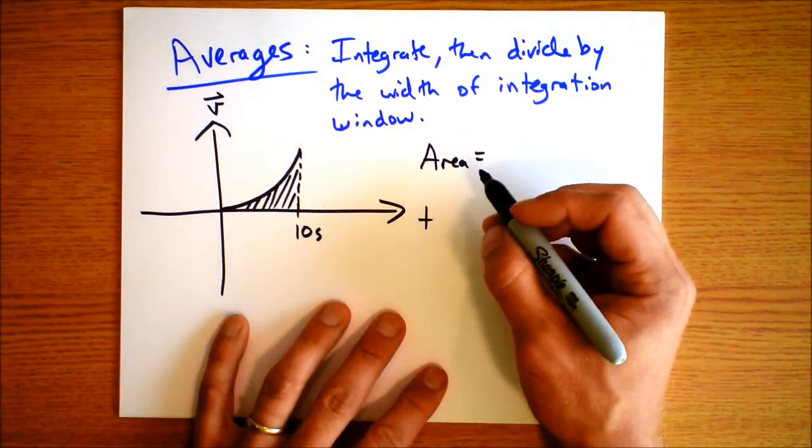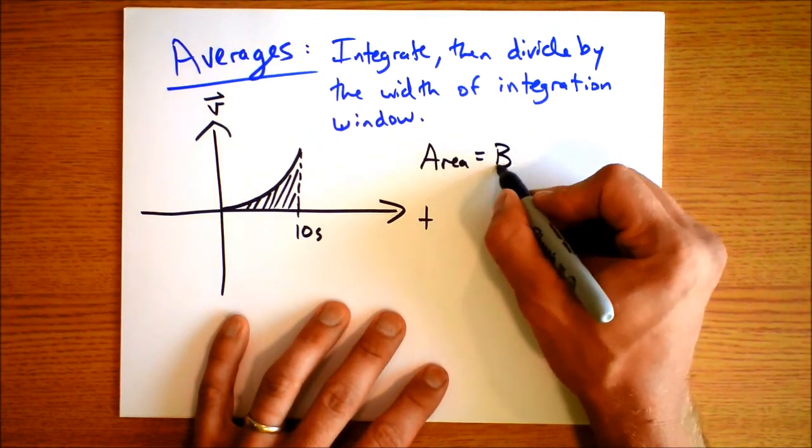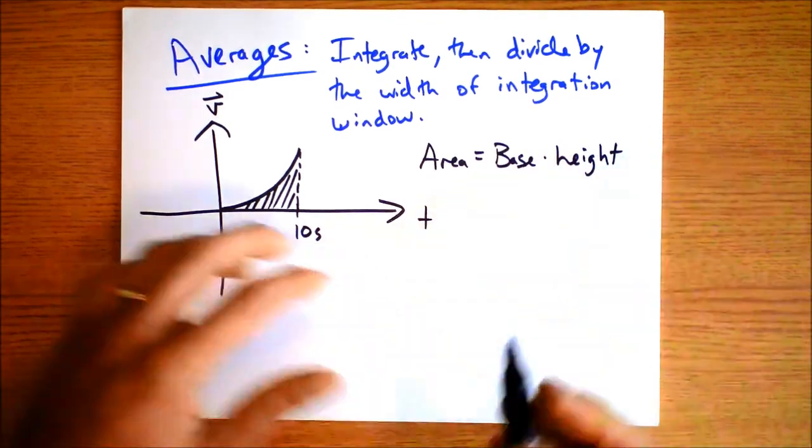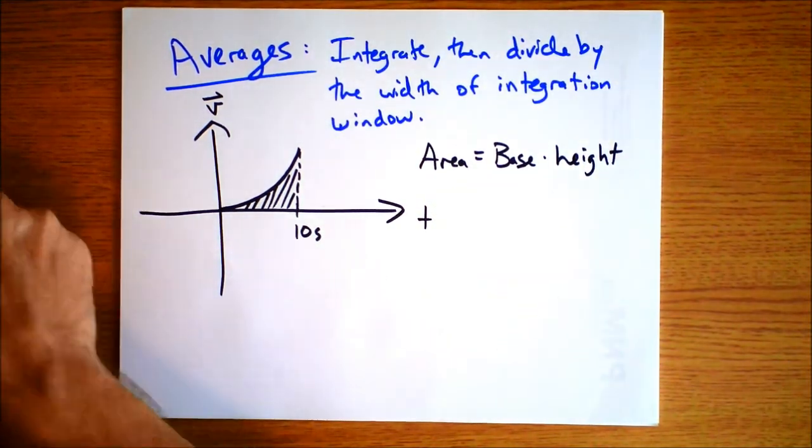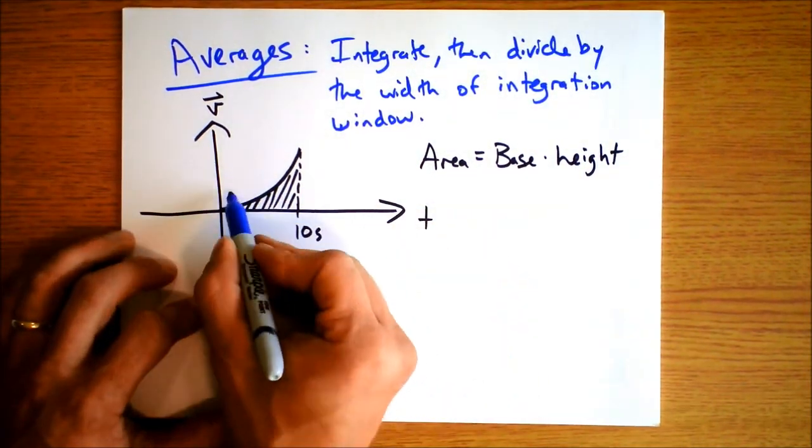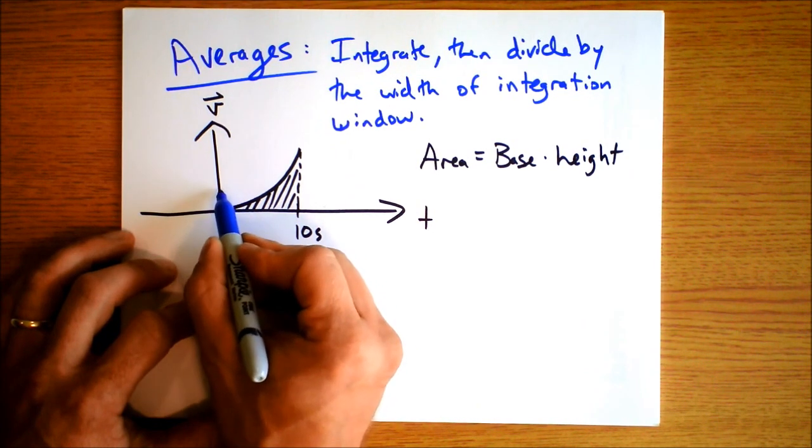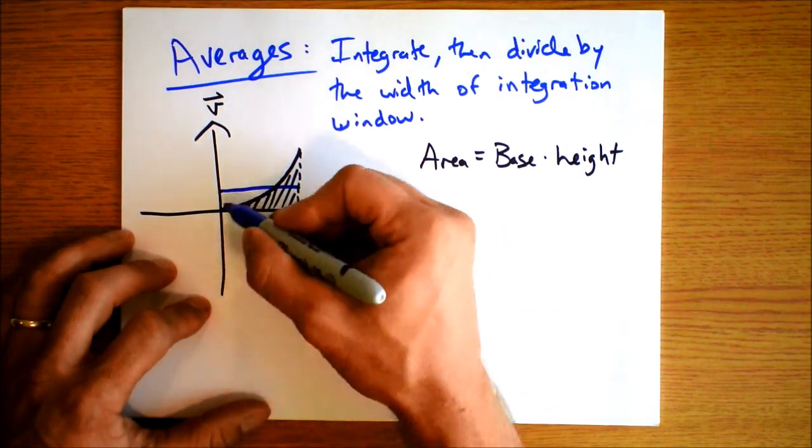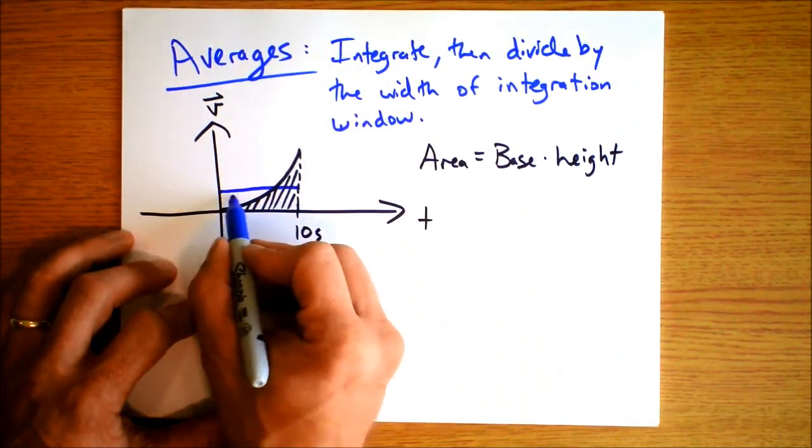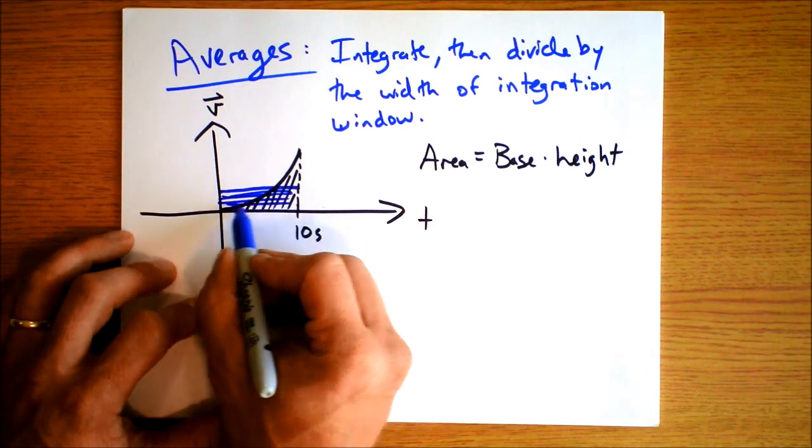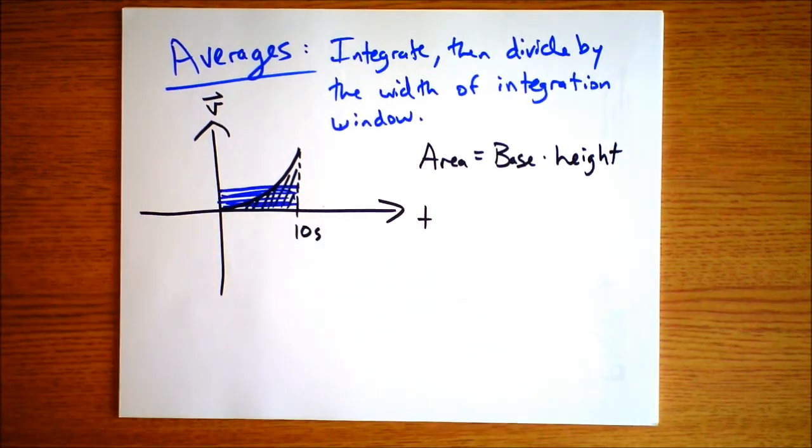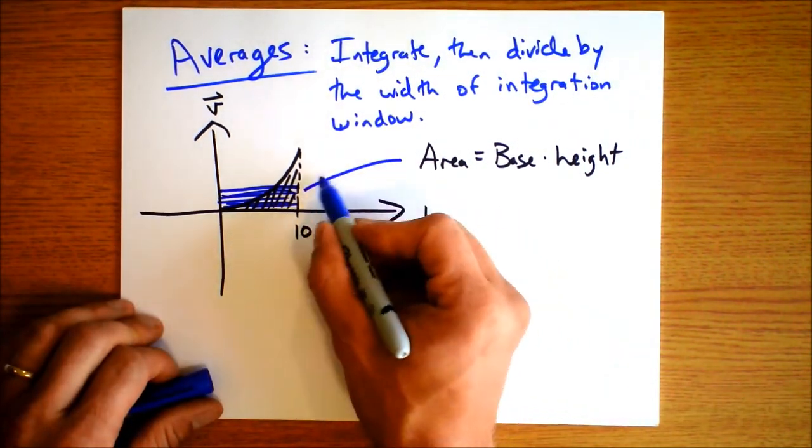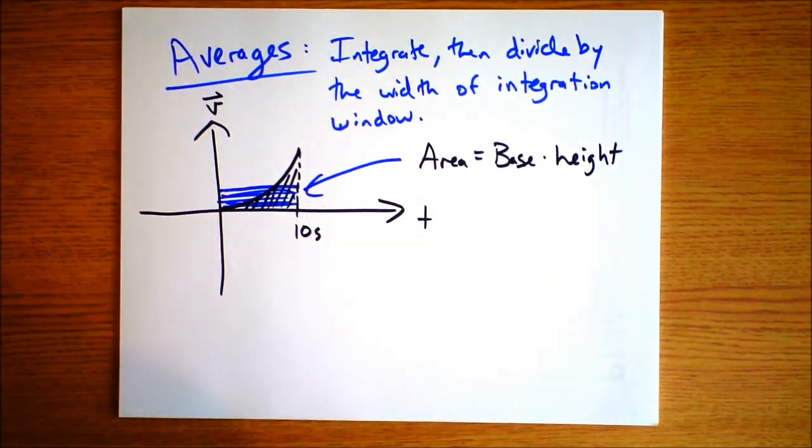And you're interested in finding what your average velocity is during this time so you can find your displacement. Pretty obviously a goal that you might want to have. And here's the thing, you know that the area under the curve, the area that I have cross hatched right there, that area is base times height for a rectangle.